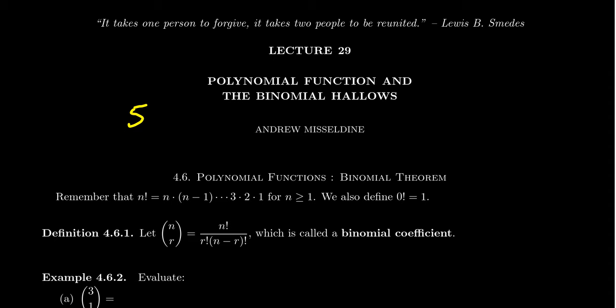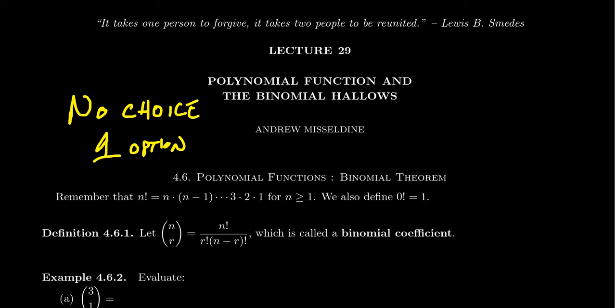Coming back to 0 factorial: what if you have no kids in the line? Maybe they all stayed home. If you have no kids, how many options do you have? You might think there are no options, but when someone says there's no option, what they really mean is there's one option — no choice. Choice would mean a diversity of options. So lining up zero kids, there's only one option. That means zero factorial equals one.